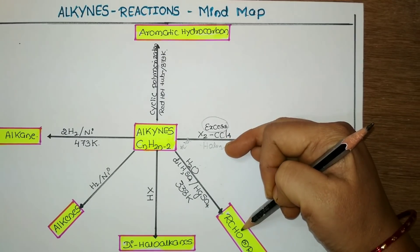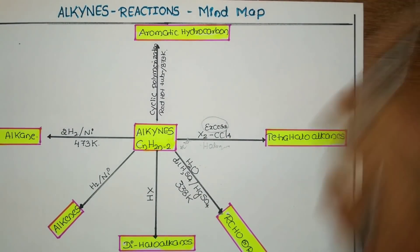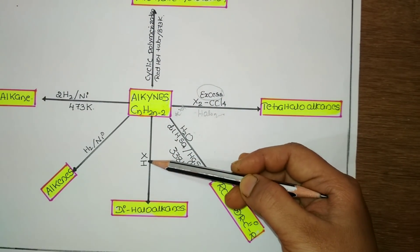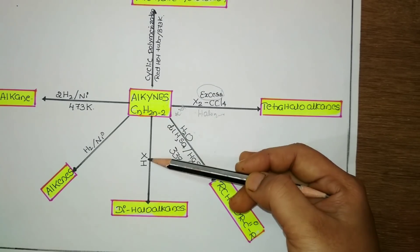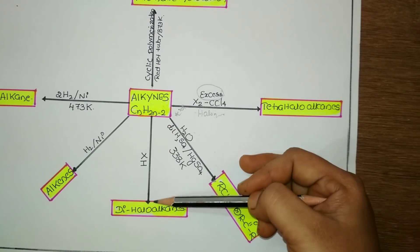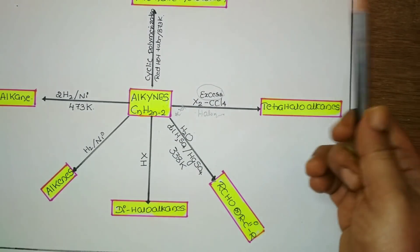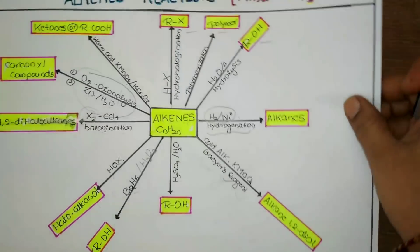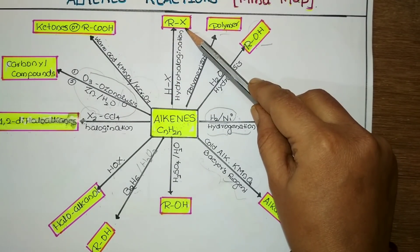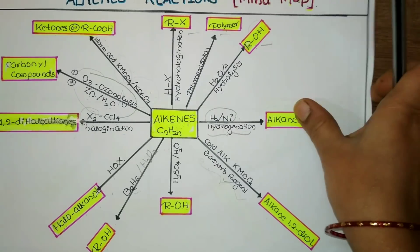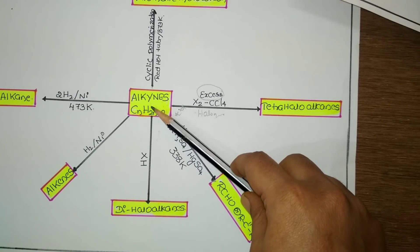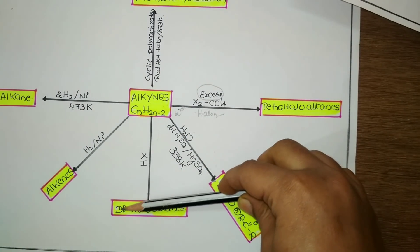Next, alkynes when treated with limited hydrogen halide give dihalo alkanes. Same thing we discussed for alkenes. When alkenes are treated with hydrogen halide, it gives respective alkyl halide since there is a single double bond. Here you can see two pi bonds in case of alkynes, so for that reason it gives dihalo alkanes.